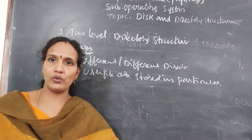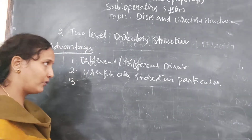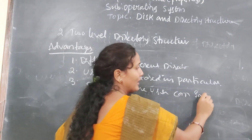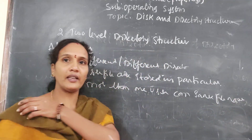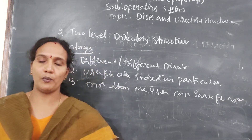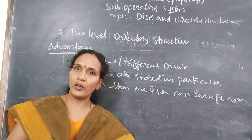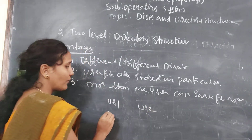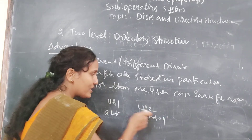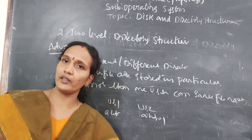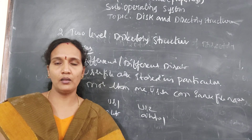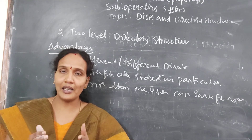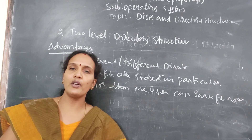Third advantage: more than one user can have the same file name without a name collision problem, because user directories are different. For example, user one directory can have index.html and user two can also have index.html — since the users are different they can have the same name and same type without any problem. Fourth advantage: when a user wants to search any file, they search in their folder only — no need to search other directories.